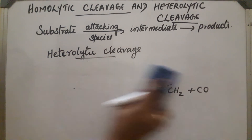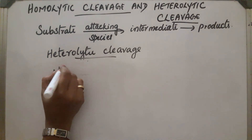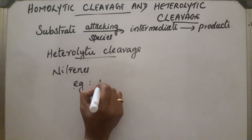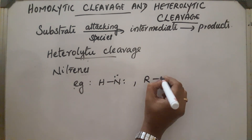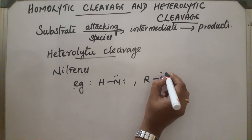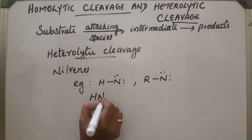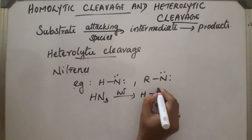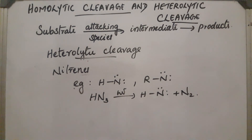The fourth intermediate is nitrenes. These are nitrogen-containing reactive intermediates. An example reaction is azides in the presence of high-energy radiation (hν/light) getting converted into a nitrene (N:) plus N2.